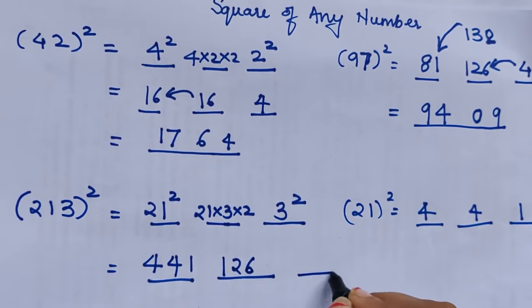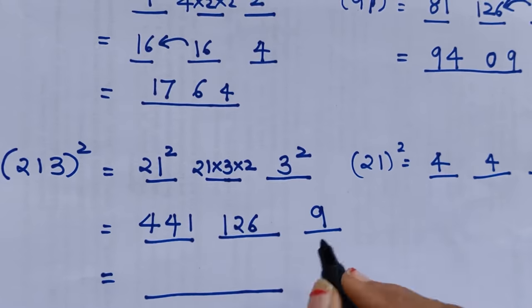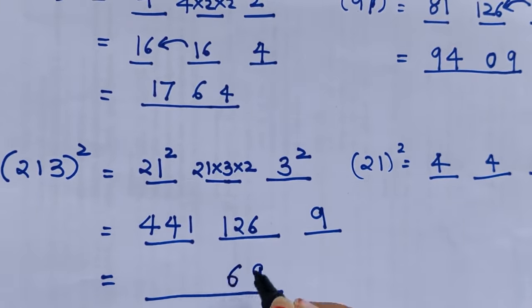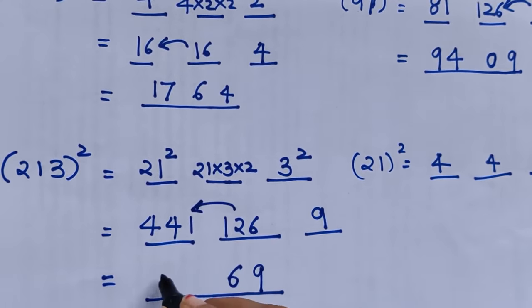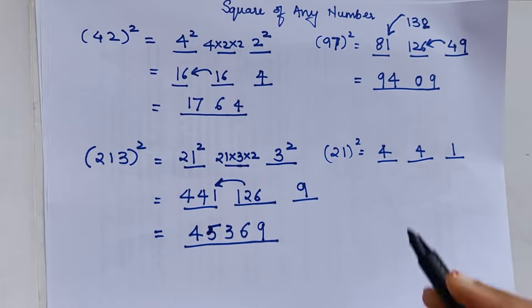For my last part, I will just consider the units place. So 9 is written as it is, the units place of 126 is 6, and 12 which is left over gets added to 441. So we get 453. So now you can find the square of any number in a matter of seconds.